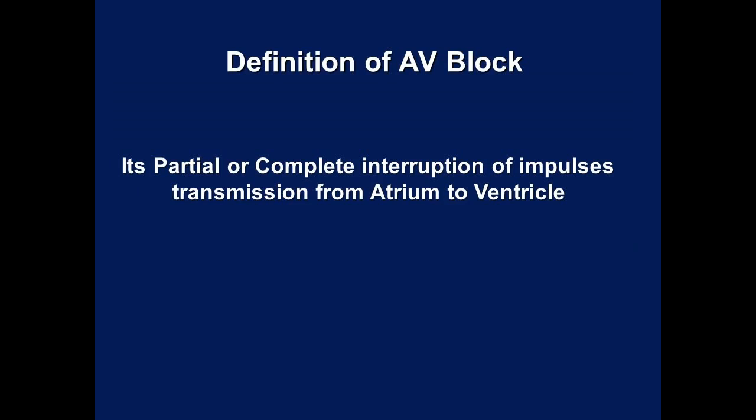Definition of Atrioventricular Block: It is partial or complete interruption of impulse transmission from the atrium to the ventricle.